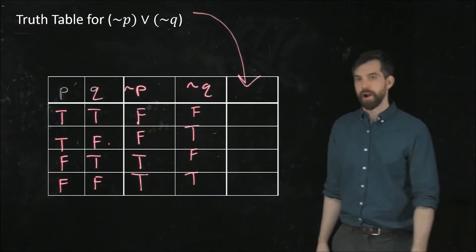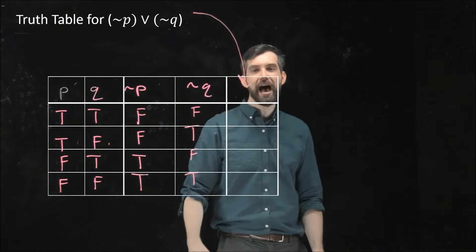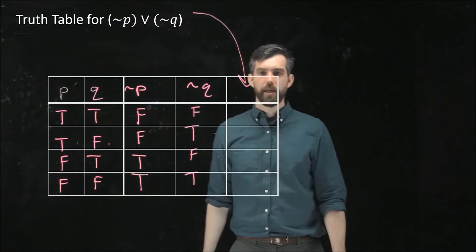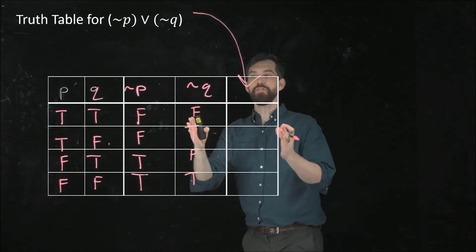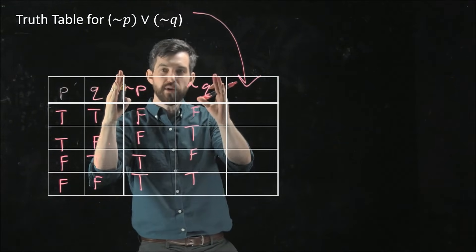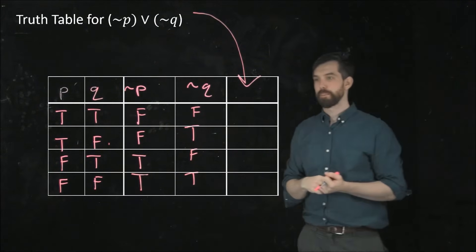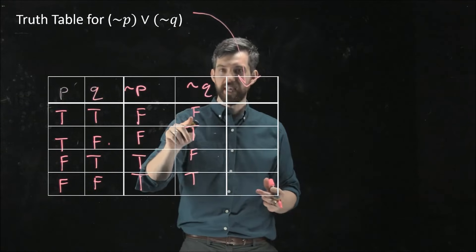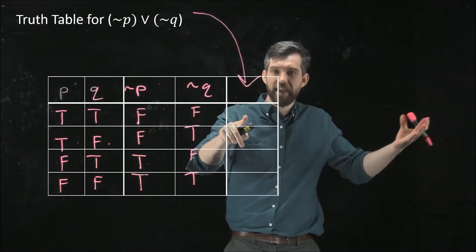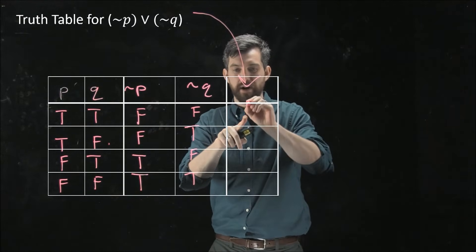Now comes the tricky part. I want to put these two things together because it's going to be not P or not Q. That tells me if one of the two of these columns, the not P and the not Q columns, is true, then my output is true as well. So what I have here, I have a false and a false. Neither of them is true, so the output is false.